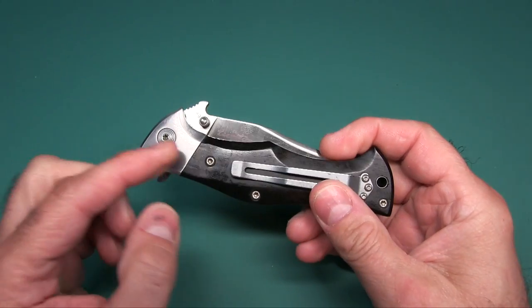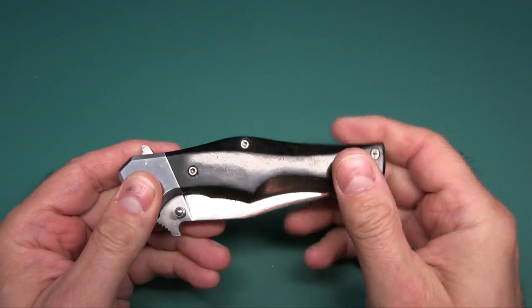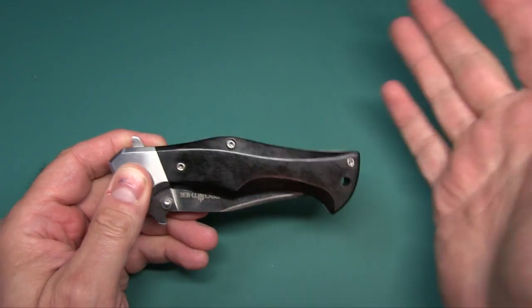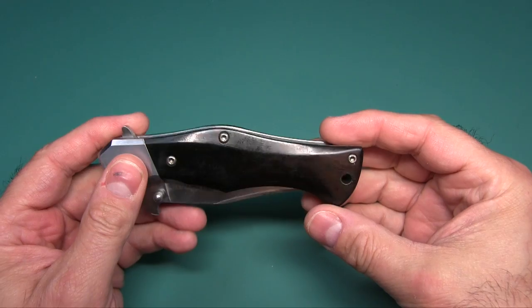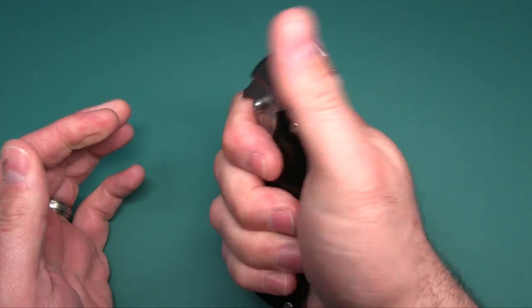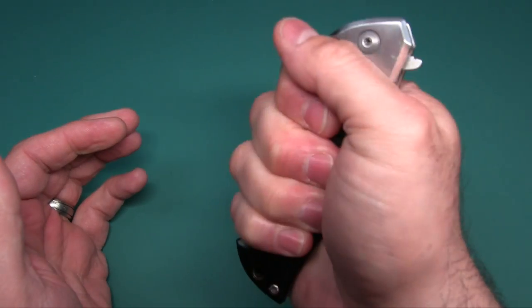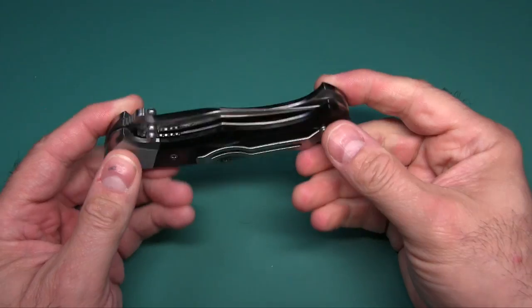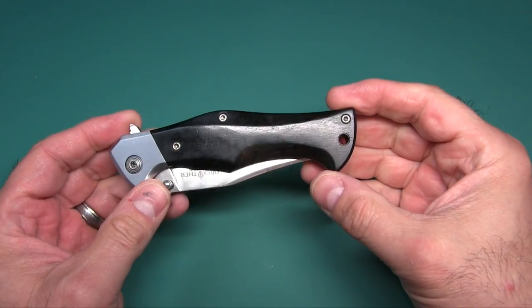You can see it has some nice stainless steel bolsters. It has some really nice ebony wood, or it's just wood stained almost black. But that is wood. So if you like having a large piece of wood in your hand, this is the knife for you.